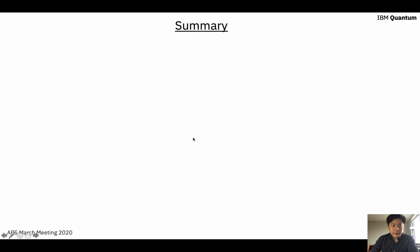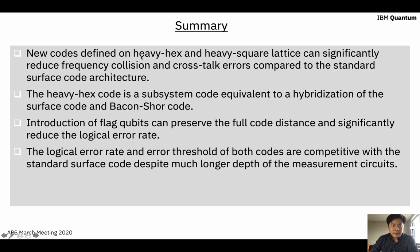Now we go to the summary of this talk. We have found new codes defined on heavy hex and heavy square lattice, which can significantly reduce the frequency collision and the crosstalk. The heavy hex code is a hybridization of the surface and Bacon-Shor code. The introduction of flag qubits can preserve the full code distance and significantly reduce logical error rate. Also the logical error rate and error threshold of both types of codes are quite competitive with the standard surface code, despite much longer depths of the measurement circuits. Obviously the advantage is in terms of the hardware implementation that they can have significantly low crosstalk error and frequency collision. Okay, so that's my talk. Thanks for your attention.